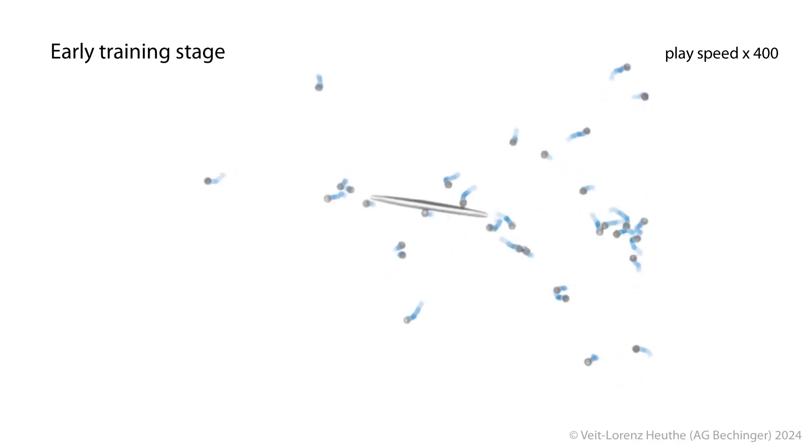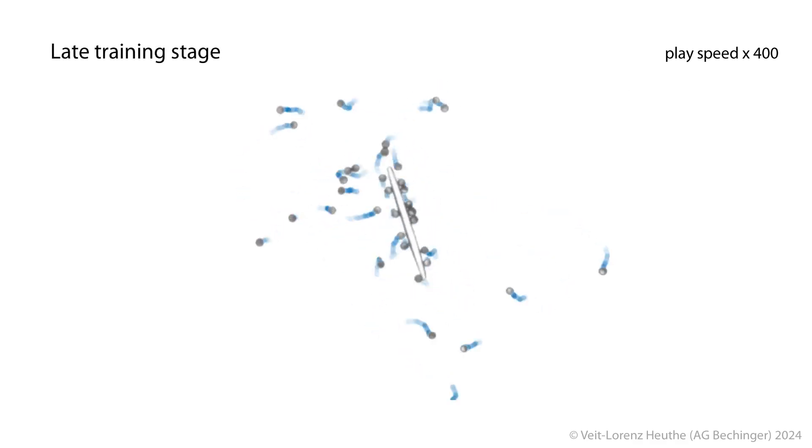But how to make sure all robots contribute equally and don't just let the others do all the work? To rate the contribution of each robot to the swarm performance individually, we made use of so-called counterfactual rewards.